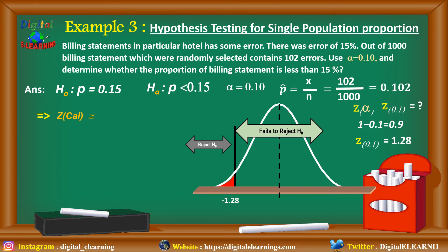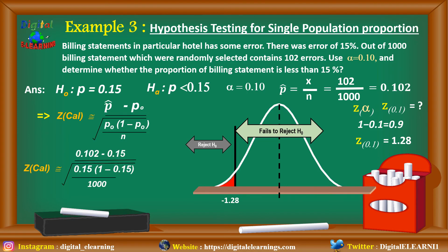Now we calculate the Z stat value using the formula: p-hat minus p0 divided by square root of p0 times 1 minus p0 divided by n. Putting in the values, we get Z stat as minus 4.25, which falls in the rejection region. Since minus 4.25 is less than minus 1.28, we reject the null hypothesis in favour of the alternate at 0.1 level of significance. There is sufficient evidence to conclude that the true percentage of statement errors is less than 15%.